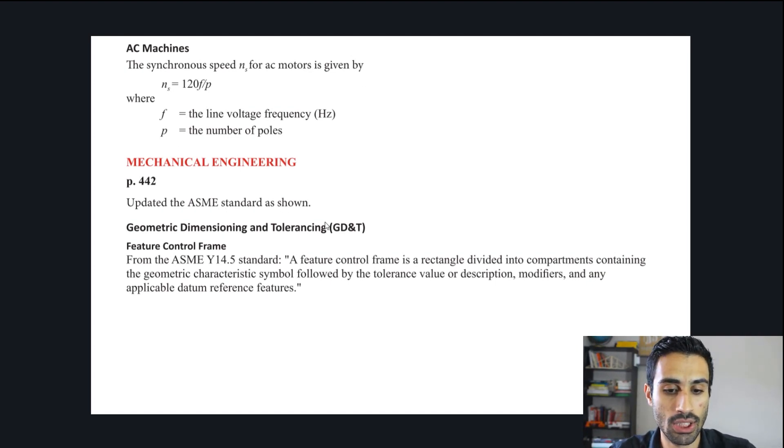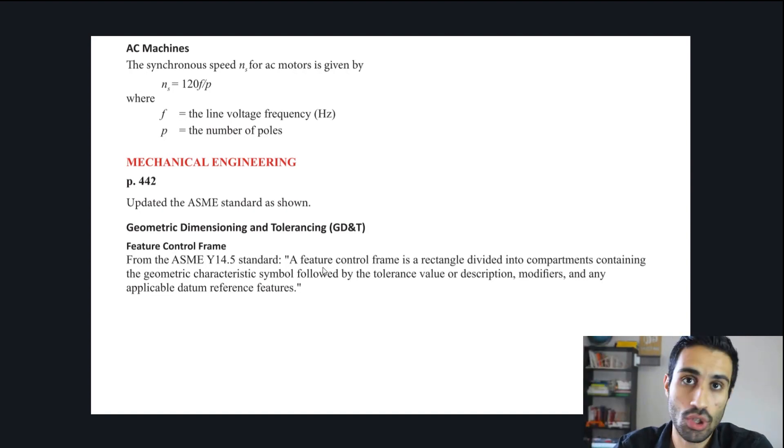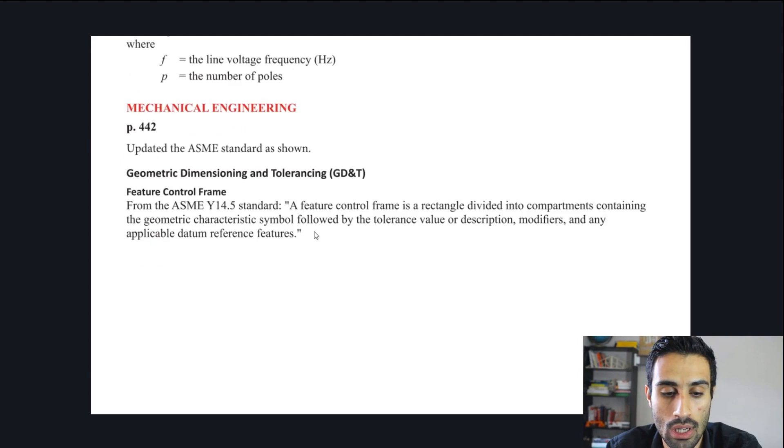Then you have the mechanical engineering. They updated the ASME standard. This is under the geometric dimensioning and tolerancing, GD&T. They just put a definition for feature control frame, and they updated that definition. They expect us to know about feature control frames, what they mean, and what the certain symbols mean. I think just the basics, especially for something like the FE about feature control frames. Make sure you know that and review that as well.